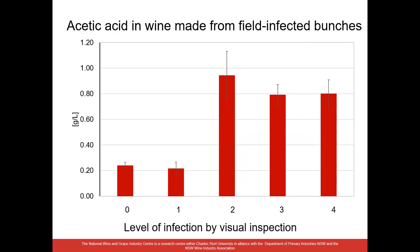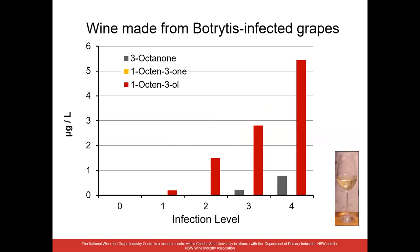Turning to the wine results, first looking at acetic acid — not much of a surprise. Once we jumped from level one to level two infection, there was a big jump in acetic acid up to one gram per litre, which is above the permitted limit. This is no doubt due to acetic acid bacteria, though Botrytis itself can also produce some acetic acid. Looking at the mouldy earthy characters in the wine now, it's not all bad news — a number of these compounds have been reduced and taken out during the winemaking process.